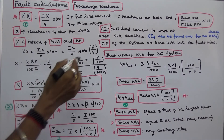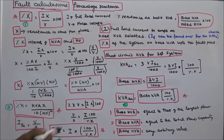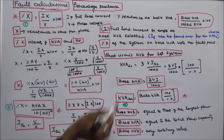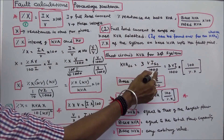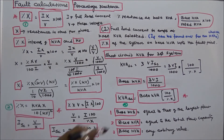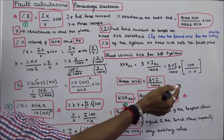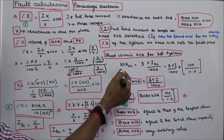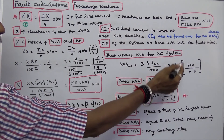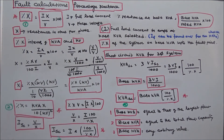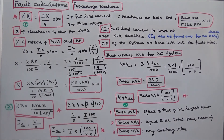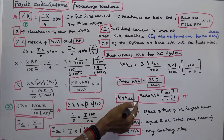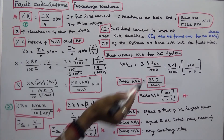For a three-phase system, short circuit KVA equals 3 times V times ISC divided by 1000. Substituting ISC equals I times 100 divided by percentage X, short circuit KVA equals 3 times V times I divided by 1000, times 100 divided by percentage X. Since 3 times V times I divided by 1000 equals base KVA, therefore short circuit KVA equals base KVA times 100 divided by percentage X.